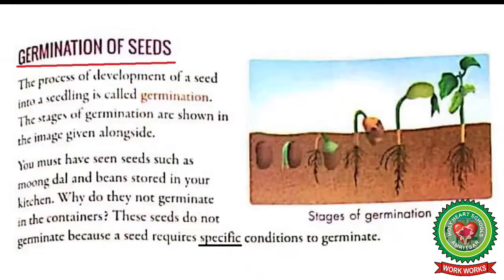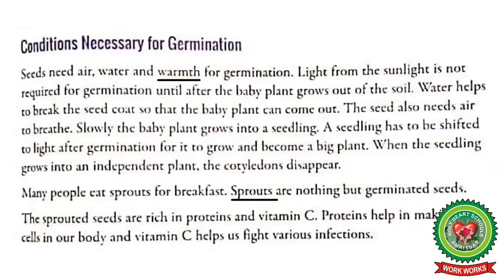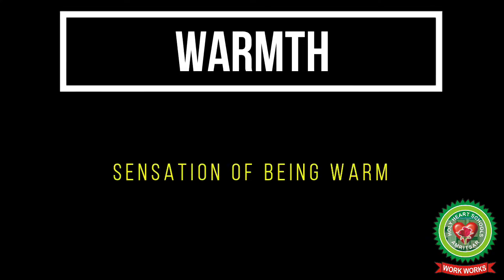When a seed falls on the soil or is planted, it needs the right conditions to grow. You might have seen that the moong dal and beans stored in a container do not germinate, because seeds need specific conditions — underline the word 'specific' and write its meaning: particular. Seeds need air, water, and warmth for germination. Underline 'warmth' and write its meaning: sensation of being warm.